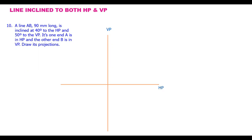Assume a plane which is perpendicular to HP and also VP. If you see this line in the side view, the plane appears as a plane in the side view. You can only see that plane in the side view; if you see it in the front view or top view, it appears like a line.